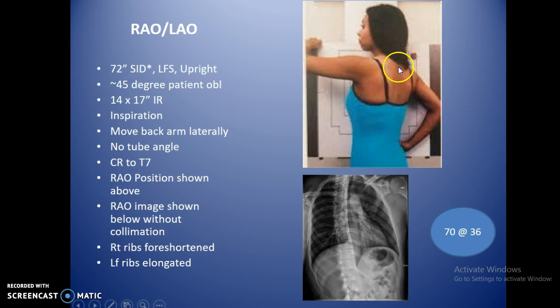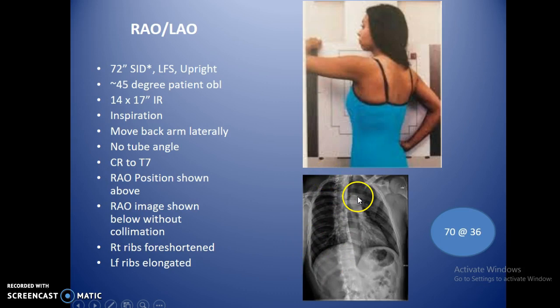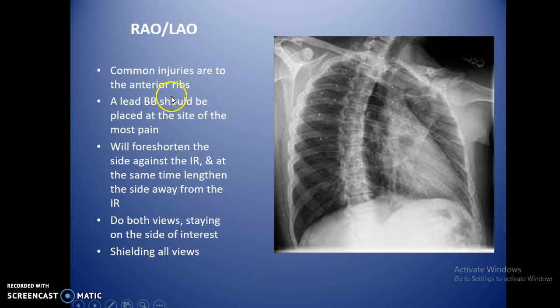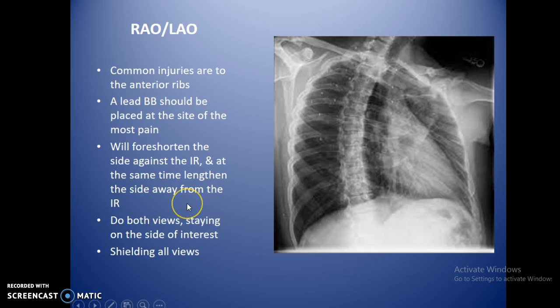In the RAO position, the right side is against the bucky. This shortens the ribs on the side against the bucky and elongates the ribs on the side away from the bucky. Both obliques are important because you may only see a fracture on one of them. Place a lead BB at the site of the most pain to draw the radiologist's eye to potential fractures. For right ribs, the RAO shortens the right ribs and the LAO elongates them.